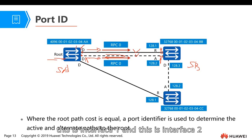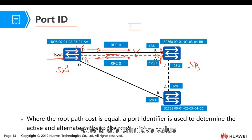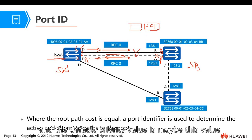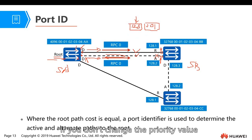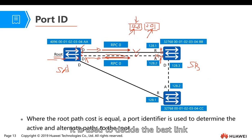For example, interface one and interface two — interface one wins, so interface two should be blocked. This is how to use the port ID. The port ID contains two parts: one is the priority value, and one is the port number. The default priority value is a set value. If you don't change the priority value, it's decided just by the port number. Of course, you can change the priority value of the interface. The port ID is used to decide the best link, best path, if the cost is the same.